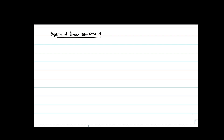Hello, now let us see the third system of linear equations. Here we are considering our system to be: x plus y plus z equal to 0 as the first equation, x plus y plus z equal to 3 as the second equation, and x plus y minus z equal to 1 as the third equation. So, there are three equations with three variables.